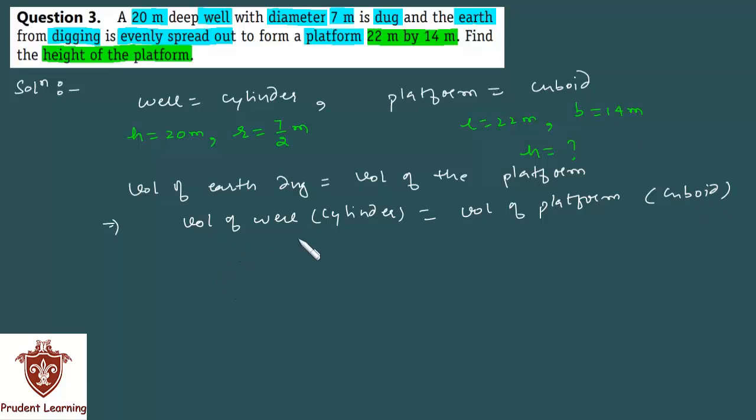Now we know that volume of a cylinder is given by pi r square h and volume of cuboid is given by l into b into h. So substituting the values we have 22 by 7 into radius of cylinder is 7 by 2 meters and height of cylinder is 20 meter.